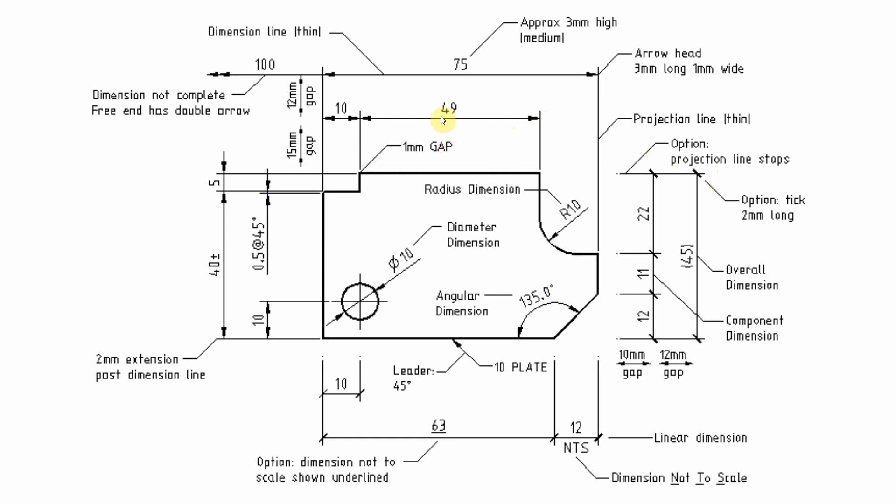Now dimension lines, as I have mentioned just a second ago, they run between projection lines. So two projection lines and a dimension line in between. And they generally terminate with an arrow or a tick. They're the two most common styles that you see. So this is an arrow example and this is a tick example.